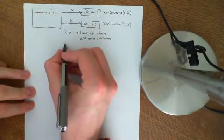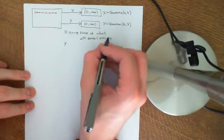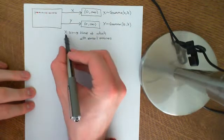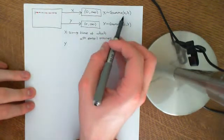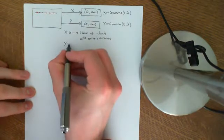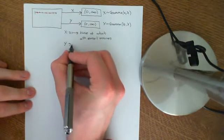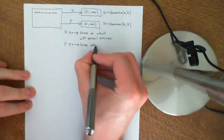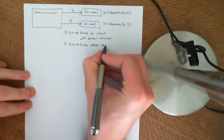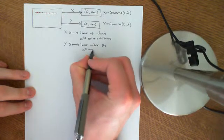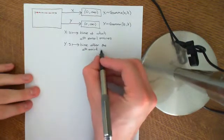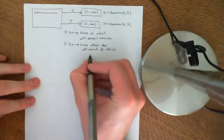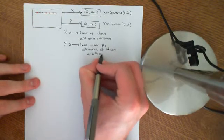Then we'll define Y. We know from when we saw the connection between the exponential and the gamma distribution that this random variable will be distributed Gamma(A, lambda). And we define Y to map every outcome onto the time after the A-th arrival at which the B-th email after the A-th email arrives — so it's the time until the (A+B)-th email arrives.